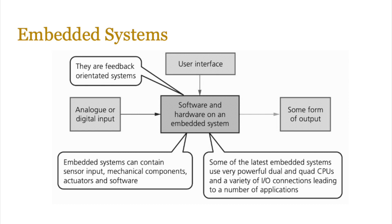All of these are useful in embedded systems. An embedded system includes both software and hardware. You start with an analog or digital input — some kind of input is needed. There's a user interface used to control the embedded system, which could be buttons or a screen, and there's some form of output. Embedded systems can contain components like sensors, mechanical components, microprocessors, actuators, and the software itself.